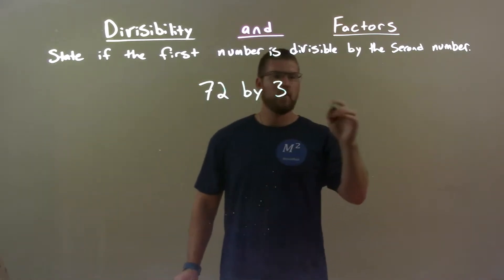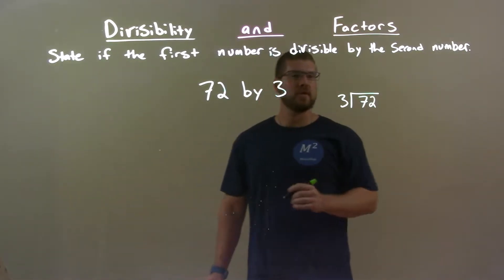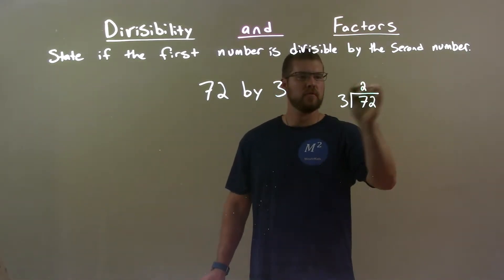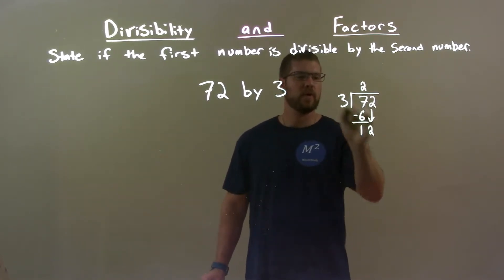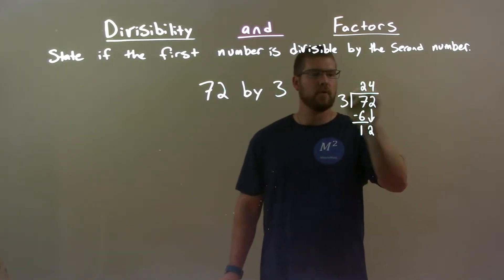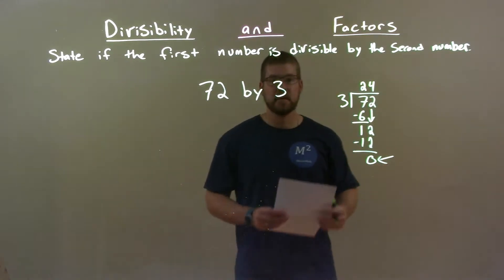Let's check that with long division. Does 3 go into 72 evenly? 3 goes into 7 two times because 2 times 3 is 6. Subtract: 7 minus 6 is 1. Bring down the 2. 3 goes into 12 four times. 4 times 3 is 12.